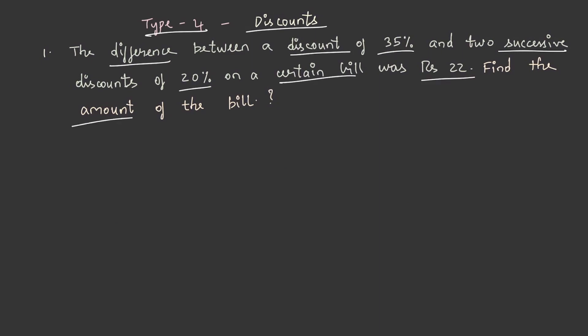Find the amount of the bill. Let's solve this. We have to find out the amount of the bill, so let's take it as rupees X. There has been a discount of 35% first and two successive discounts of 20%.